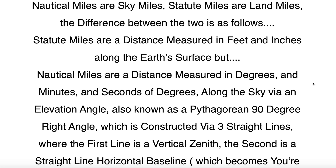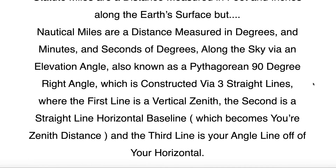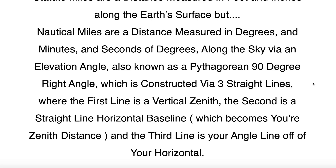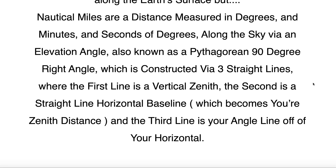Statute miles are a distance measured in feet and inches along the Earth's surface. But nautical miles are a distance measured in degrees and minutes and seconds of degrees, along the sky via an elevation angle, also known as a Pythagorean 90 degree right angle, which is constructed via three straight lines, where the first line is a vertical zenith, the second is a straight line horizontal baseline which becomes your zenith distance, and the third line is your angle line off of your horizontal.